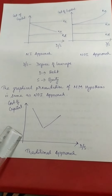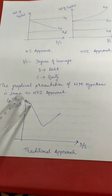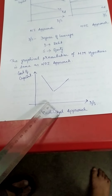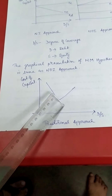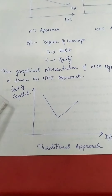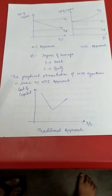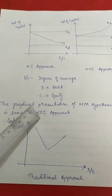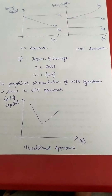In the traditional approach, the cost of capital first decreases with the increase in debt in the capital structure, and then it starts increasing after a threshold limit — this produces a U-shaped or king-shaped curve. The NOI approach and the MM hypothesis will have the same graphical representation.